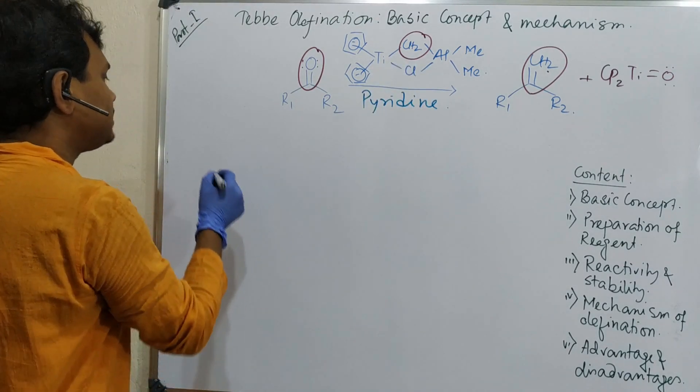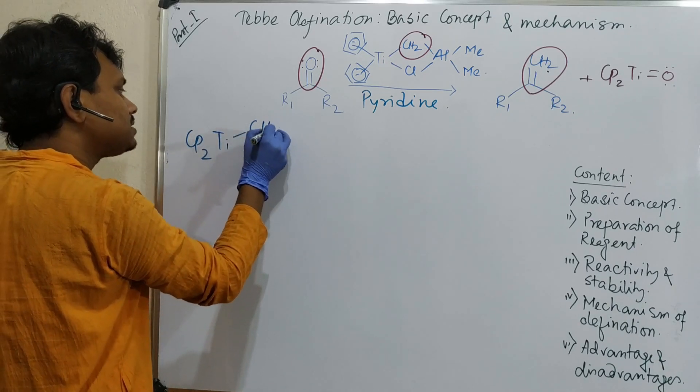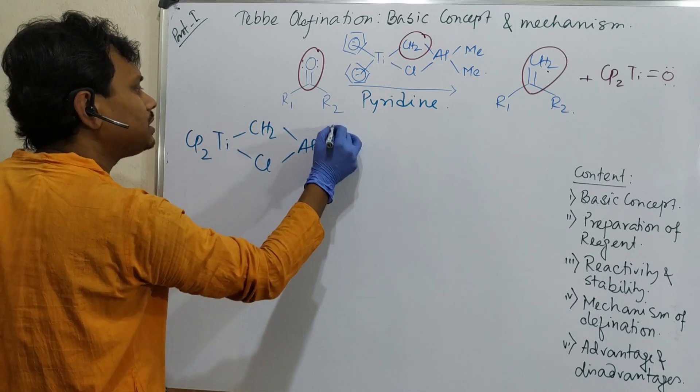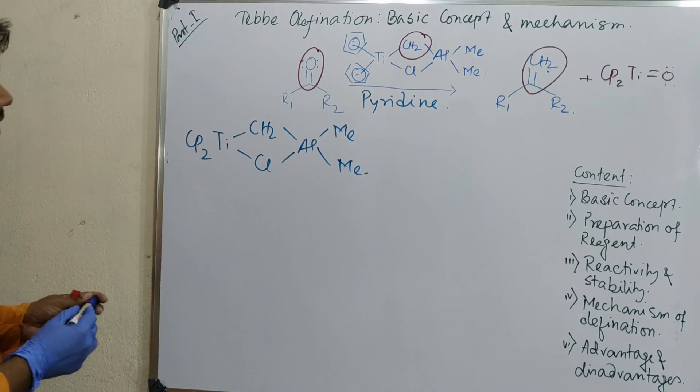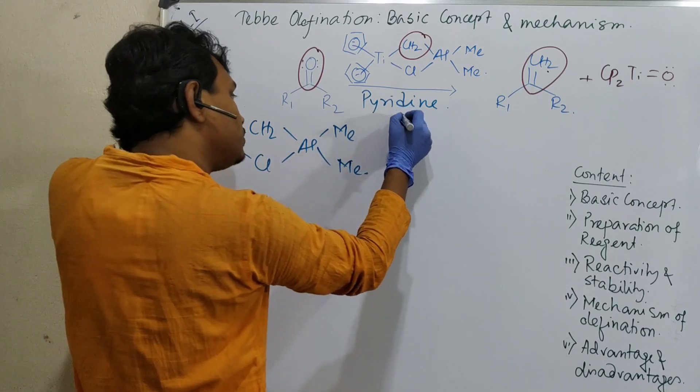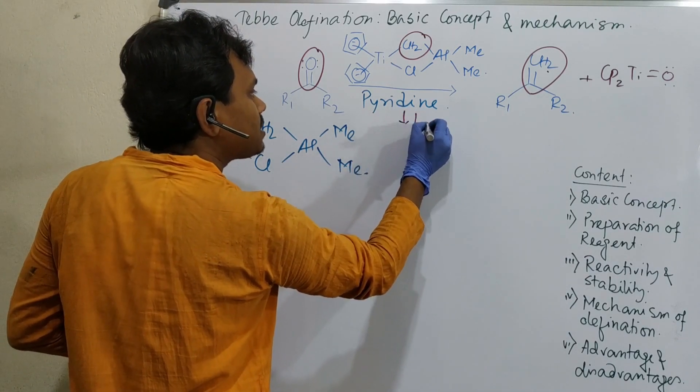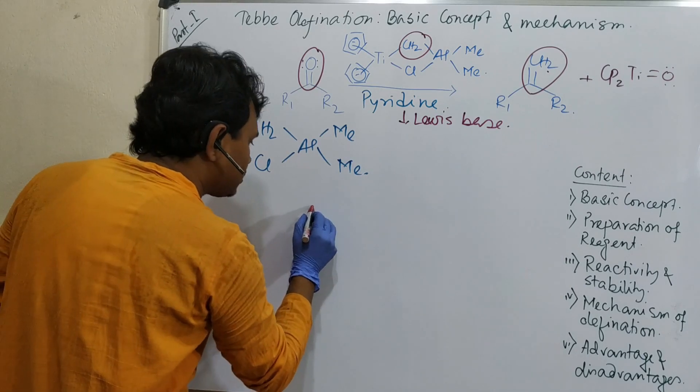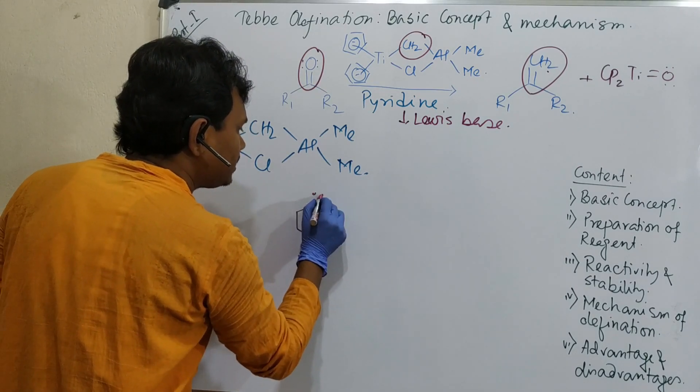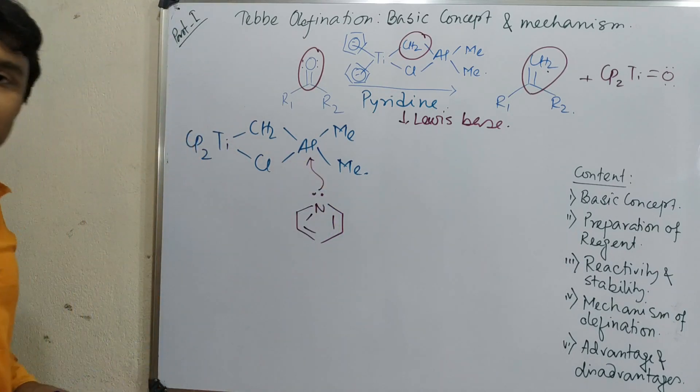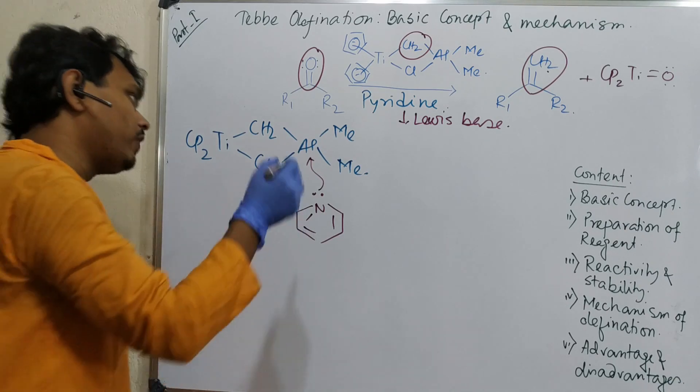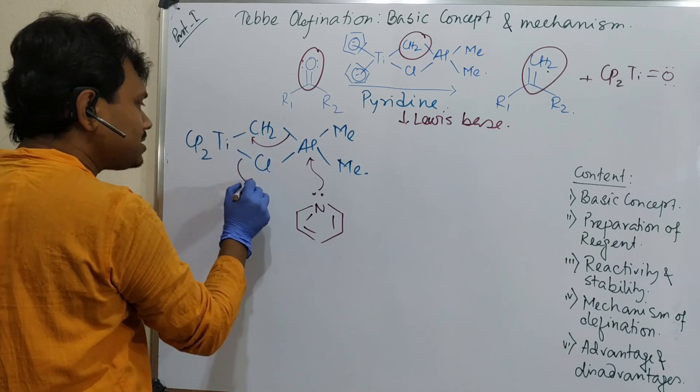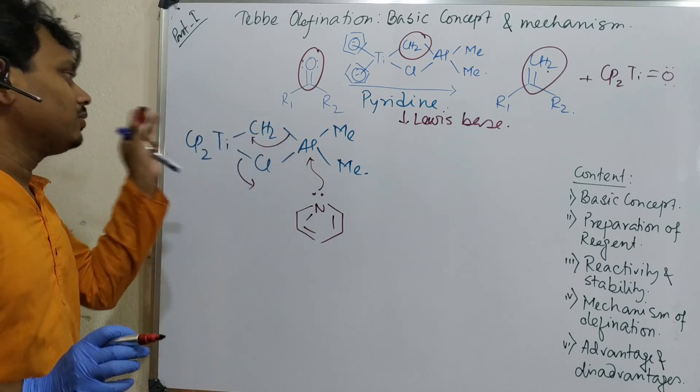What this pyridine does? This Cp2TiCH2ClAlClMe2. What it results? This pyridine acts as a Lewis base. So what happens? If we draw, this is the pyridine. So it attacks to this center. Right now this aluminum is octet field. But when it attacks, so what happens? Simply this breaks. And if it comes here, then this chloride also breaks.